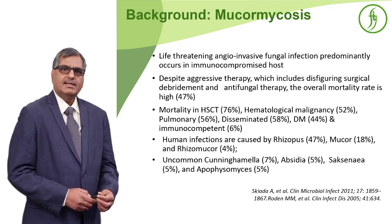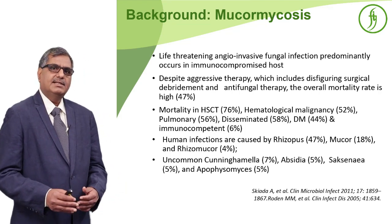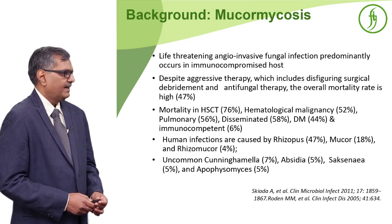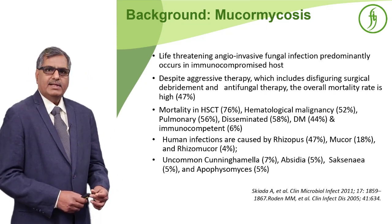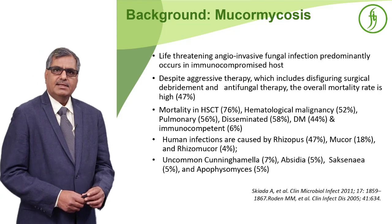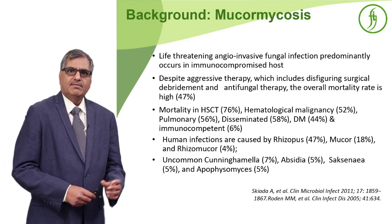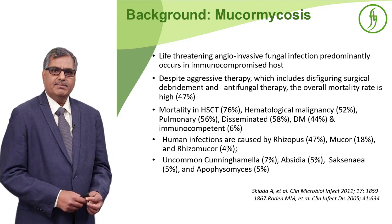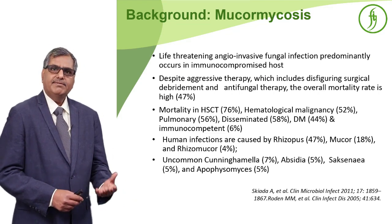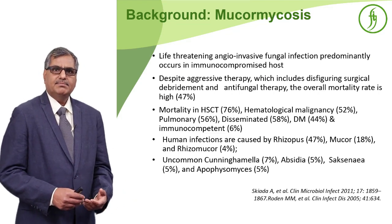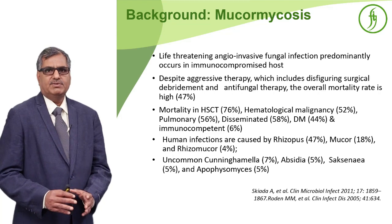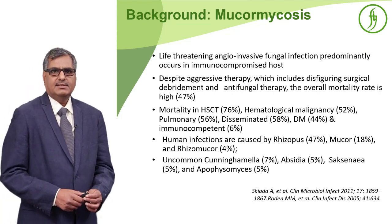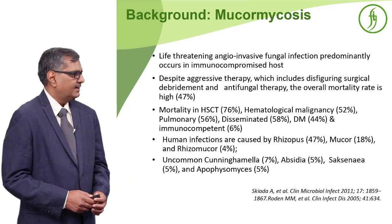Those patients who have underlying diabetes mellitus have mortality a little lower compared to hematological malignancies. But when this deadly infection occurs in an immunocompetent host — and we will discuss why immunocompetent hosts develop mucormycosis — the mortality is significantly less, because the underlying host immune system is normal and they can fight off this serious deadly infection better.